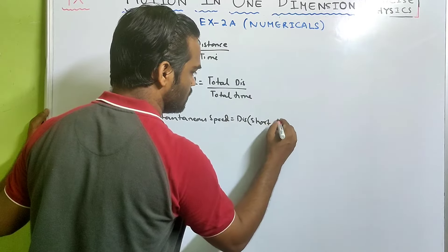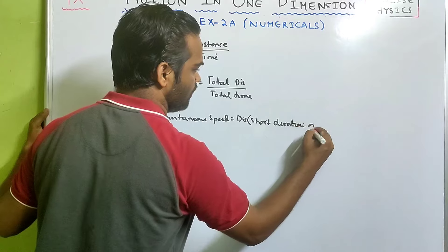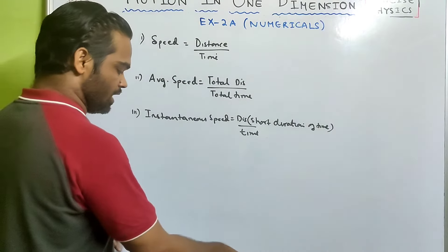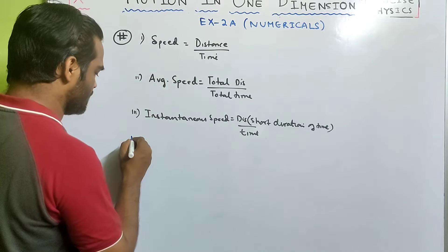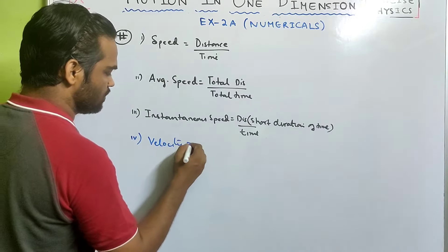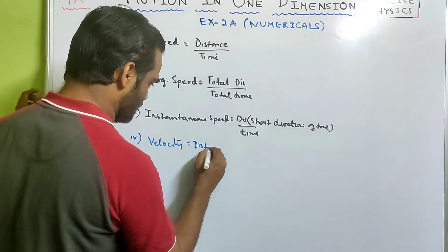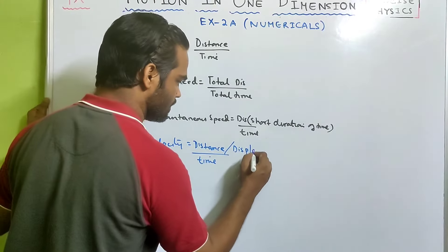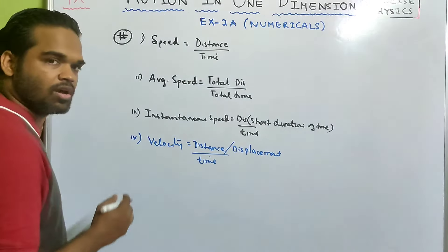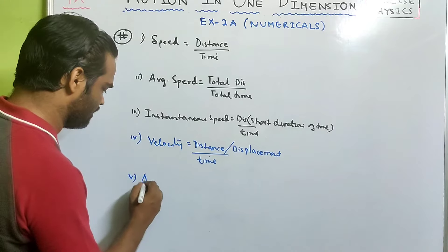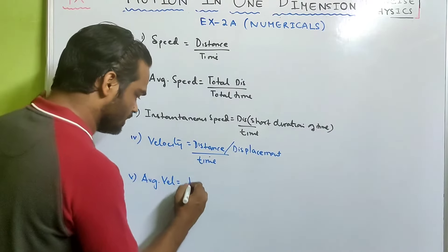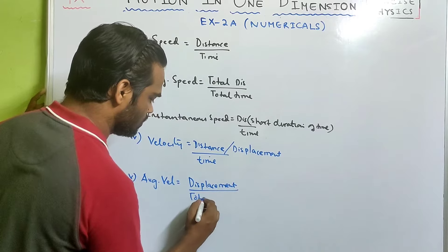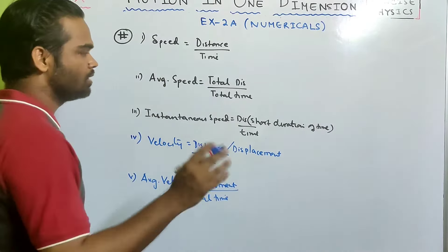Instantaneous speed is the distance covered in a very short duration of time divided by time. If the body is moving in one particular direction, instead of speed we write velocity. Velocity equals distance traveled in a particular direction divided by time, which is displacement by time. Average velocity is displacement by total time taken for the journey.